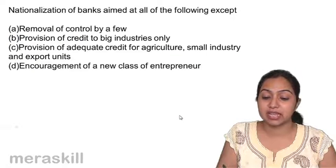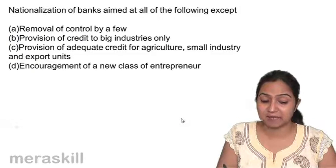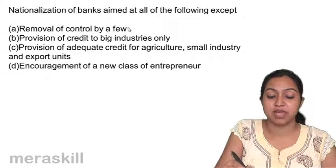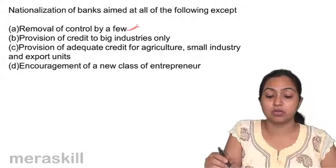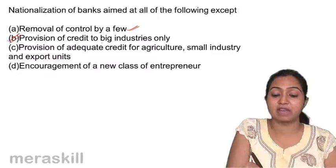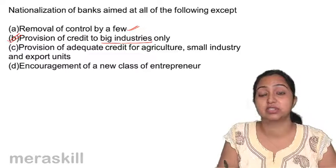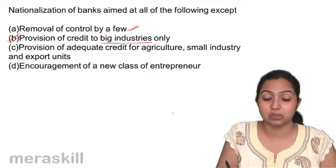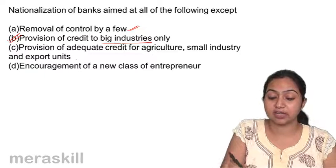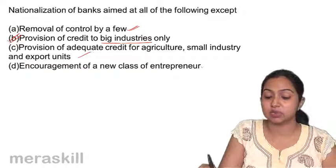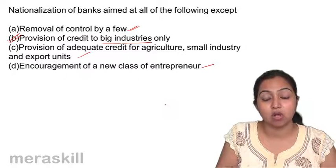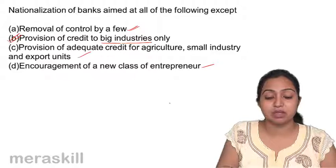Nationalization of banks aimed at all of the following except: removal of control by a few — yes, it aimed at this. Provision of credit to big industries only — no, it did not aim at giving credit only to big industries; it aimed at giving credit to the priority sector as well. Provision of adequate credit for agriculture — yes. Encouragement of a new class of entrepreneurs — yes. Nationalization aimed at all these things except provision of credit to big industries only.